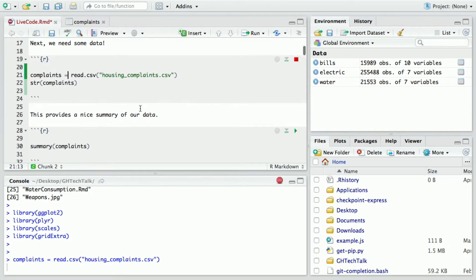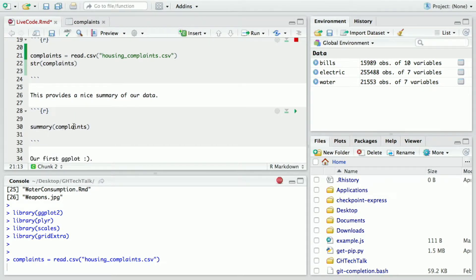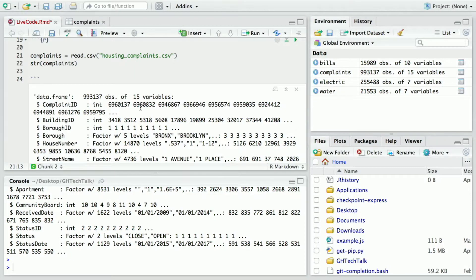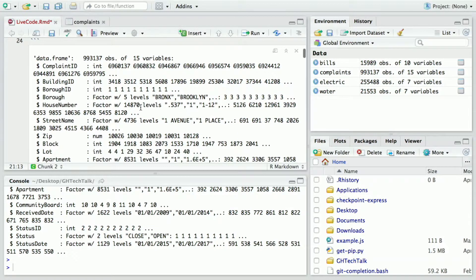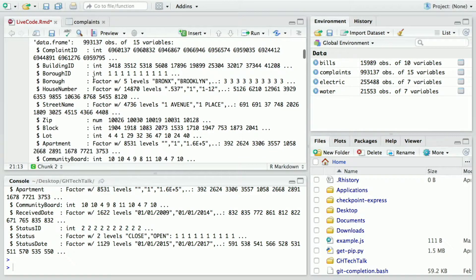So it's still loading, I'm going to explain also I'm going to run the summary command in a second and that's just going to give me a brief summary of the data. So you can see here 993,137 observations or rows in 15 different variables or columns. We have complaint ID and that's an integer, et cetera.